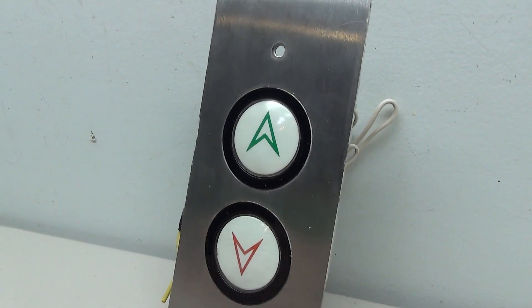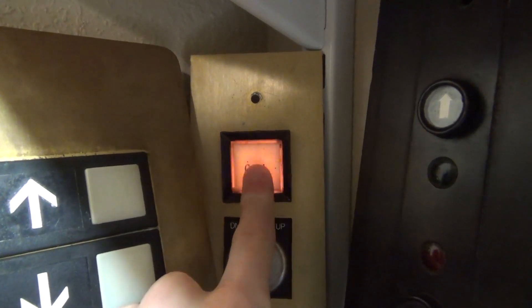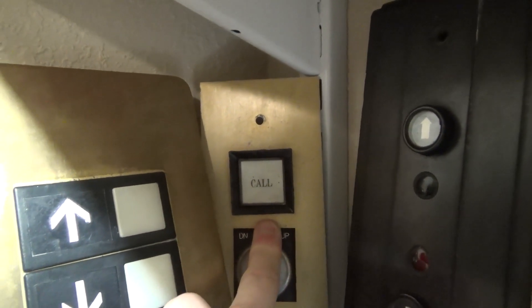However, this isn't the only type of button that US Elevator made. They also made a square version, which is very similar to the circle in the way it presses. And I've actually worked on this panel in the past.